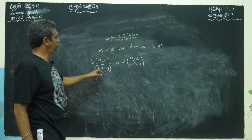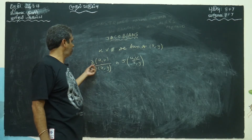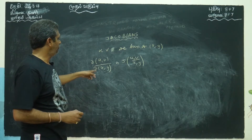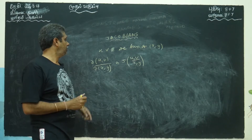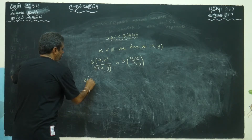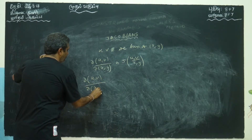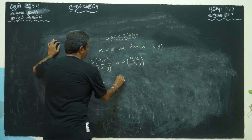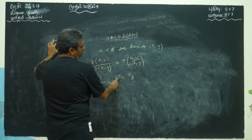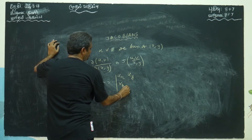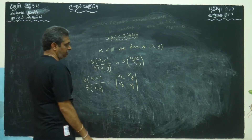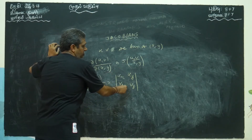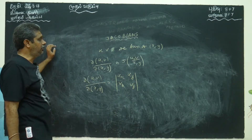The meaning is: u is a function of x and y, v is a function of x and y. The notation is ∂(u,v)/∂(x,y). To expand this, where x and y are independent variables, you write the Jacobian as a determinant: u_x, u_y in the first row and v_x, v_y in the second row — where u_x means ∂u/∂x, u_y means ∂u/∂y. It does not matter if you swap rows and columns because the determinant of A equals the determinant of A transpose.